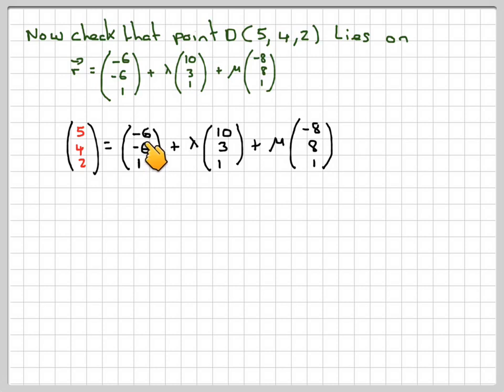However, it's easy, first of all, if you combine this vector with this one. So taking these over here, you're going to get 5 plus 6, which is 11, 4 plus 6, which is 10, 2 minus 1, which is 1, is equal to lambda (10, 3, 1) plus mu (-8, 8, 1).